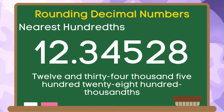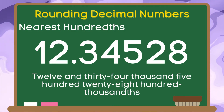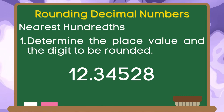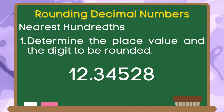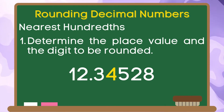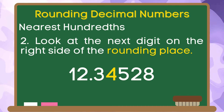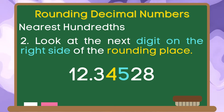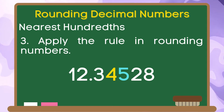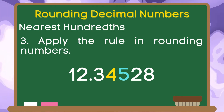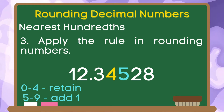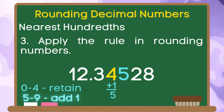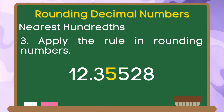We are going to round 12 and 34 thousand 528 hundred-thousandths to the nearest hundredths. Step 1: determine the place value and the digit to be rounded. Since the given place value is hundredths, the digit in the hundredths place value is 4. Step 2: look at the next digit on the right side of the rounding place. The digit at the right side of 4 is 5. Step 3: apply the rule in rounding numbers. Since 5 belongs to the group of 5 to 9, we are going to add 1 to our rounding place digit. 4 plus 1 is equal to 5, so we change our digit 4 to 5.